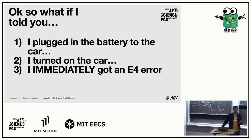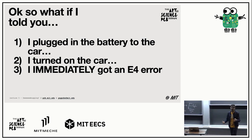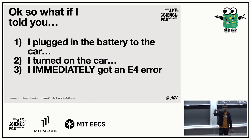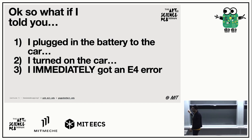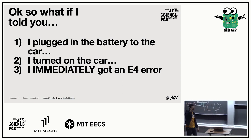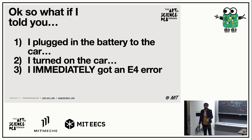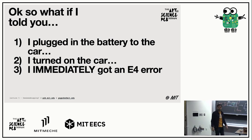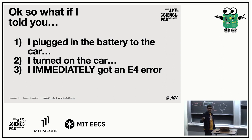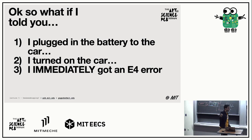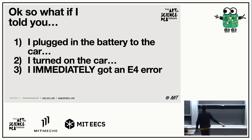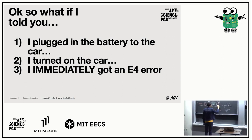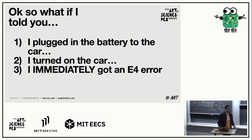Where do I start when debugging a system like this? We have a lot of theories — one could be the capacitors aren't being charged correctly; one could be a short somewhere in the circuit. The first step is: unplug it. Unplug the solar array and the motor. Check if you still get an error. In this case, when we unplugged both the motor and the array, we didn't get an E4.